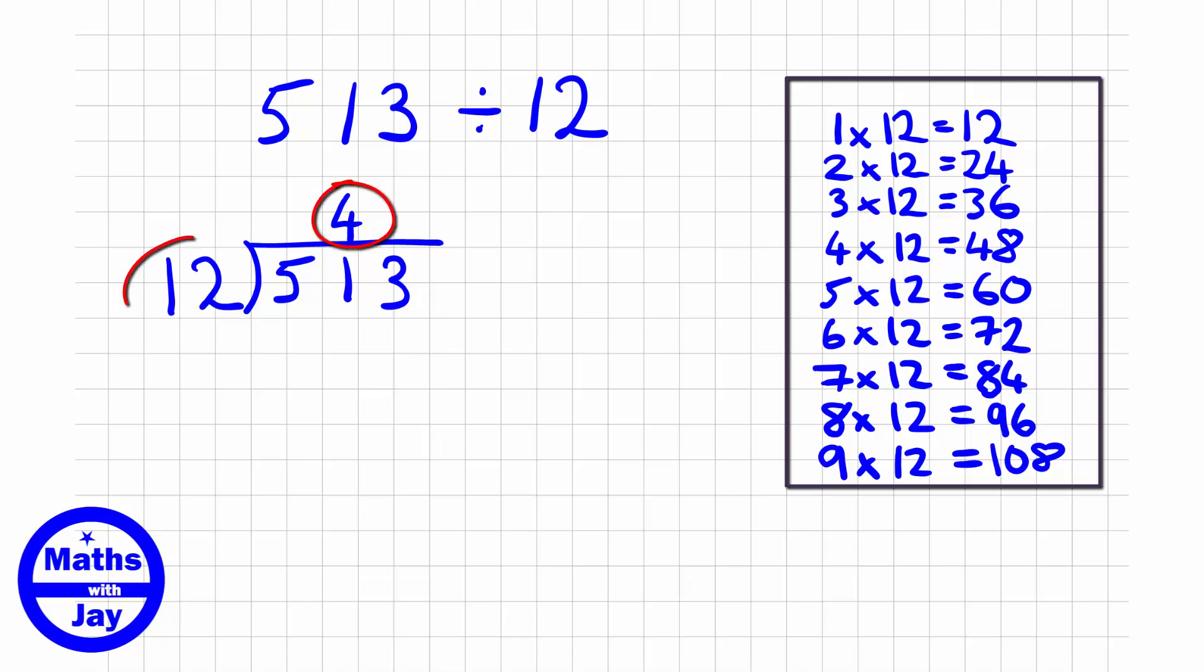So I now multiply 4 by 12 and write the answer underneath the 51. And then I subtract 48 from 51. So that's going to be 3, isn't it?